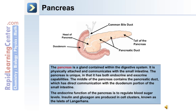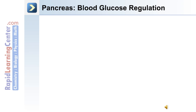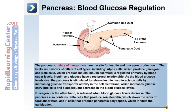Insulin and glucagon are produced in cell clusters known as the islets of Langerhans. These islets contain alpha cells, which produce glucagon, and beta cells, which produce insulin. Insulin secretion is regulated primarily by blood sugar levels. As blood glucose levels rise, the pancreas is stimulated to release insulin. Insulin acts on cells by increasing glucose transporter activity in the cell membrane, increasing glucose entry into cells and causing a subsequent decrease in blood glucose levels.